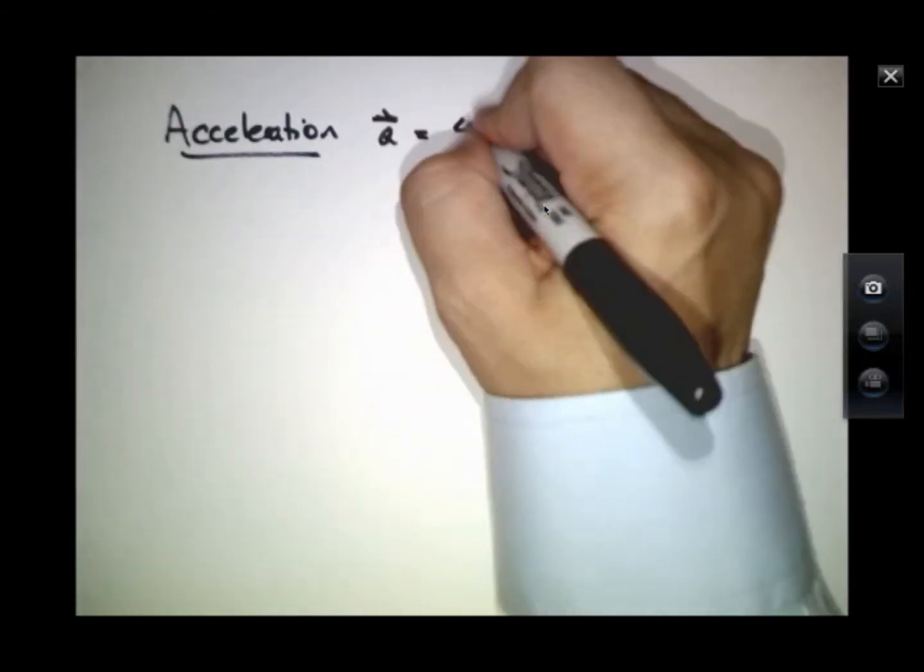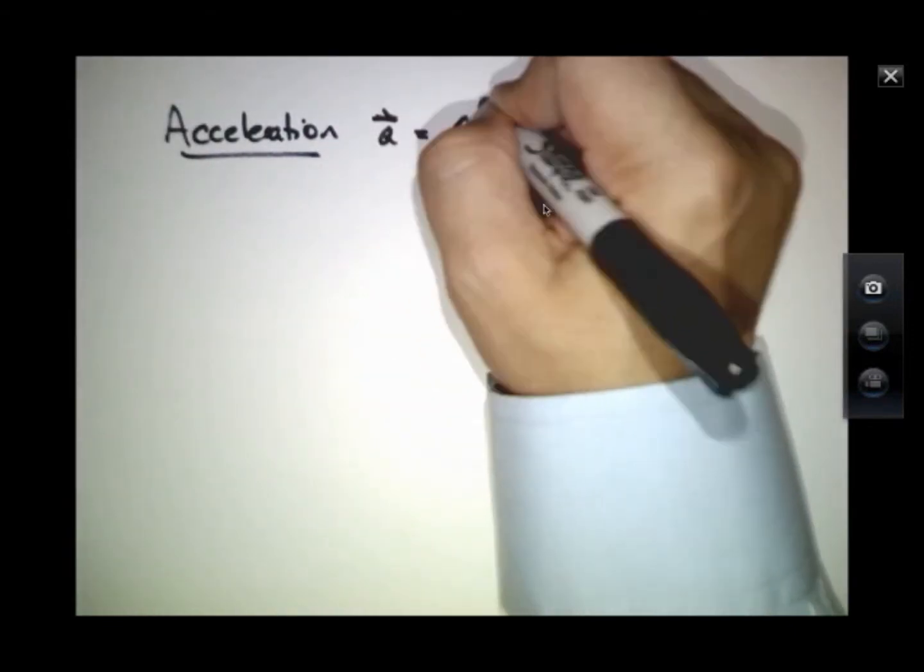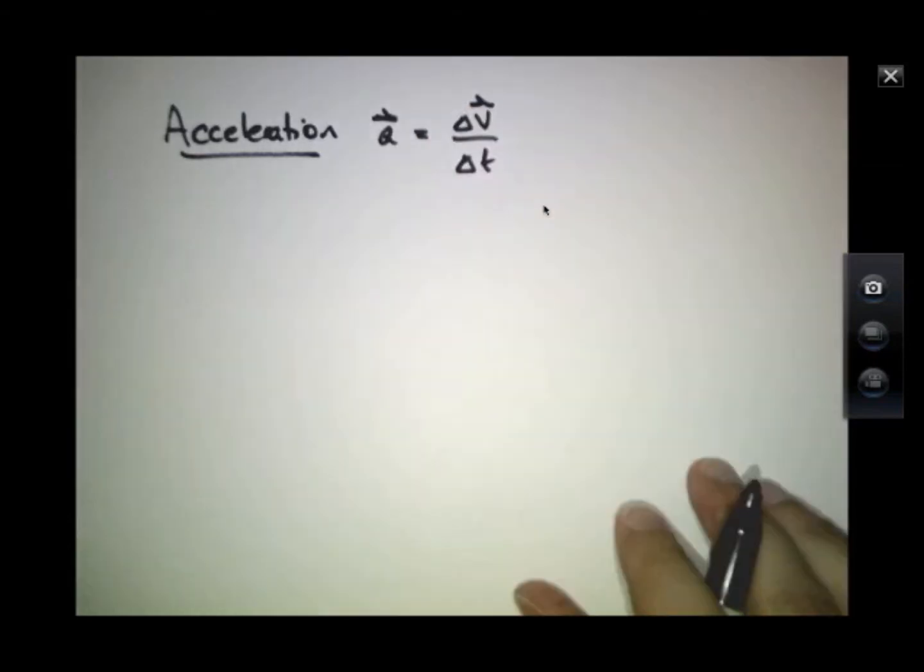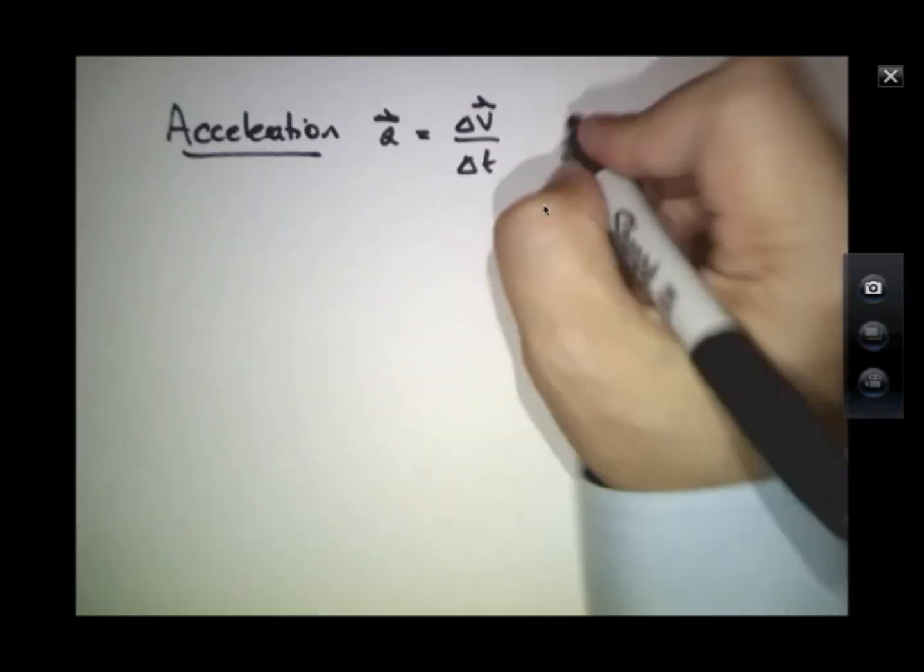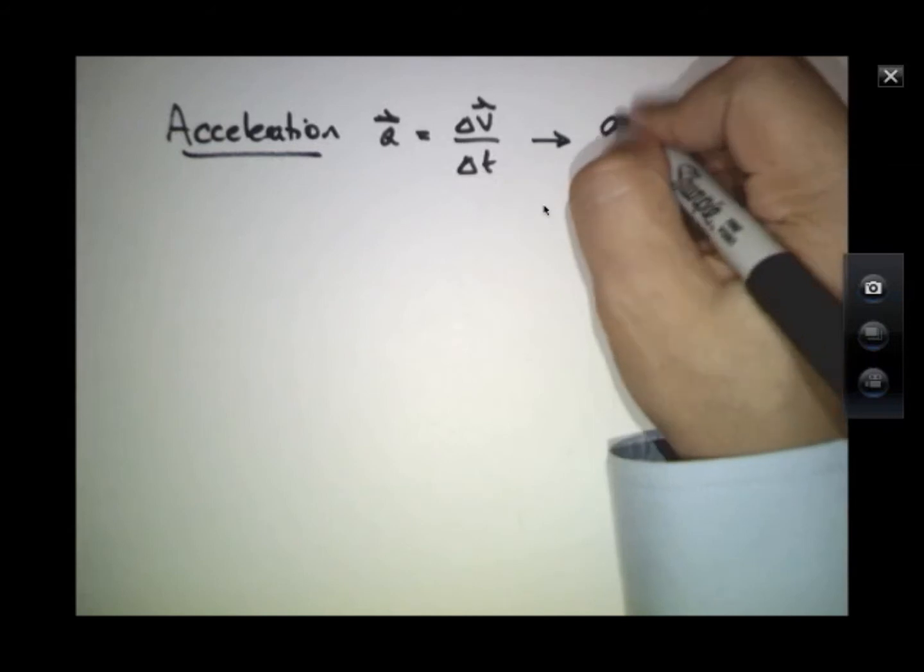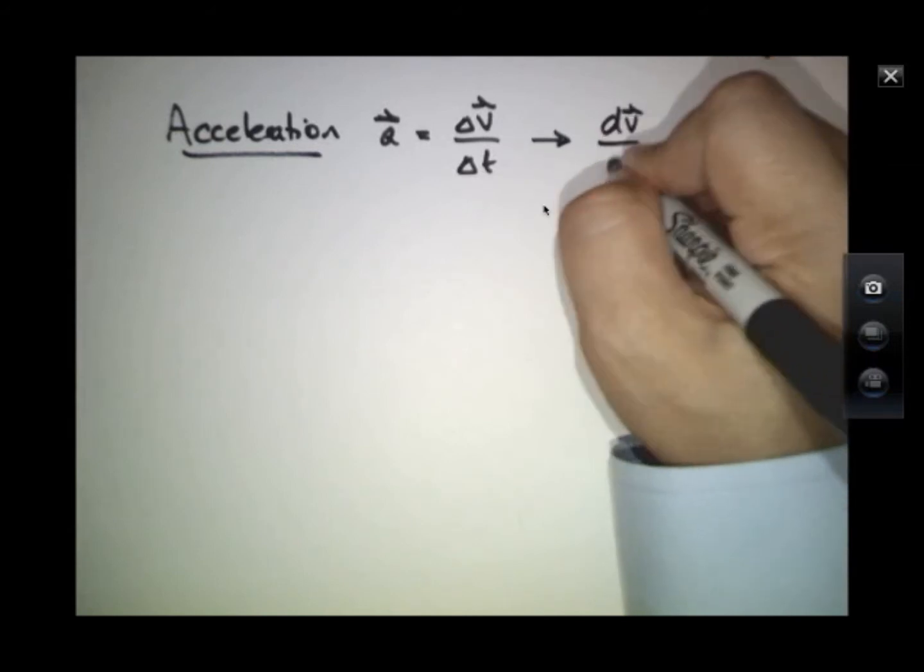Acceleration is the change in velocity over time, but now we have to describe this as a vector. And in the differential sense, again, this becomes dv/dt.